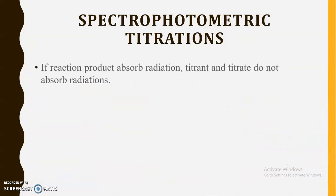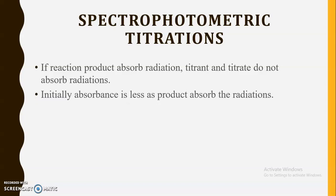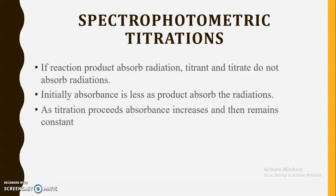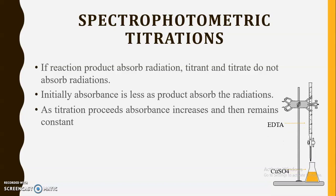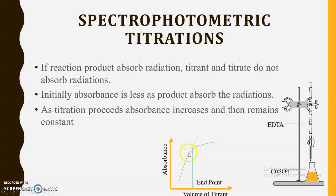The third type of spectrophotometric titration is when the reaction product absorbs the radiation and neither the titrate nor the titrant absorbs. Initially absorbance is less as the solution consists only of titrate. As titration proceeds, product forms and absorbance increases; after the endpoint it remains constant. For example, titration between EDTA and CoSO₄. Initially absorbance is low; as the complex between EDTA and CoSO₄ forms, it absorbs radiation and concentration of the complex — hence absorbance — increases.